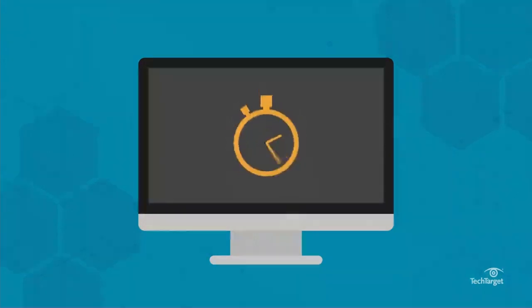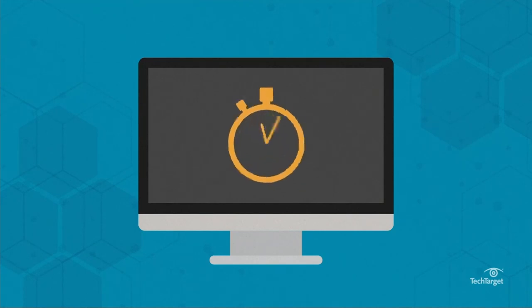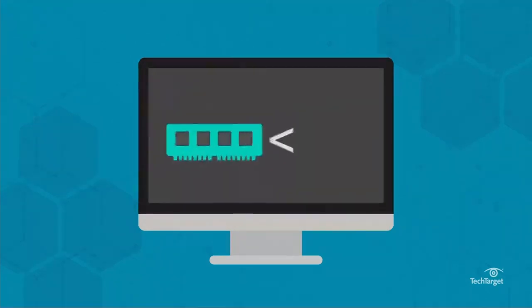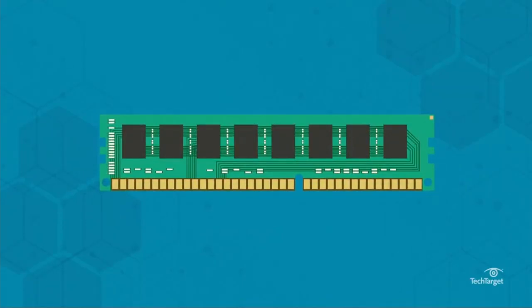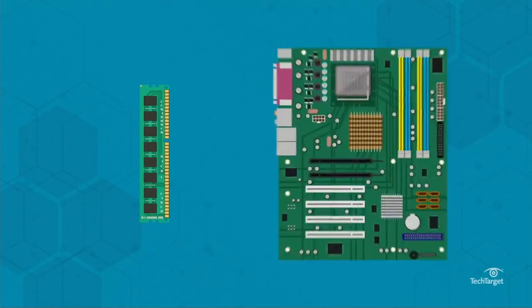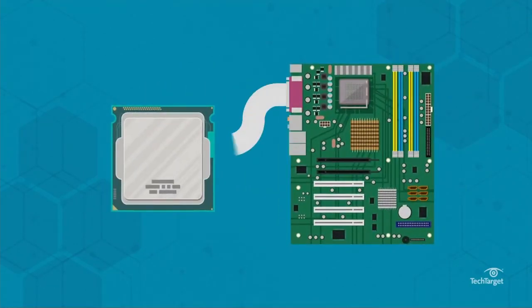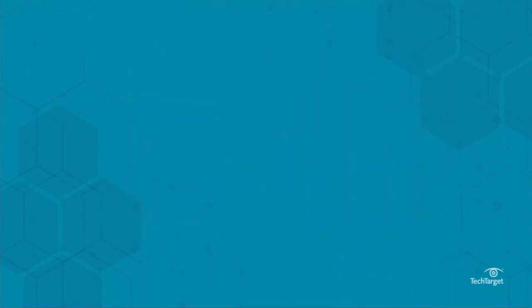System memory runs much faster than storage, but it's also more expensive. That's why computers usually have a lot less memory than storage. RAM consists of microchips combined into memory modules. These modules plug into a computer's motherboard and connect to the CPU via a bus.